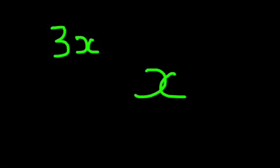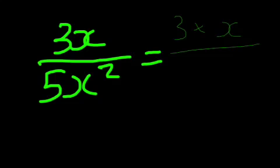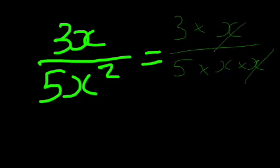You can do a very similar thing with algebra. For example, we've got 3x over 5x squared. It's best to write your x carefully when dealing with this. You can rewrite it as 3 times x all over 5 times x times x, and we can just cancel the x's out, so we end up with 3 over 5x.